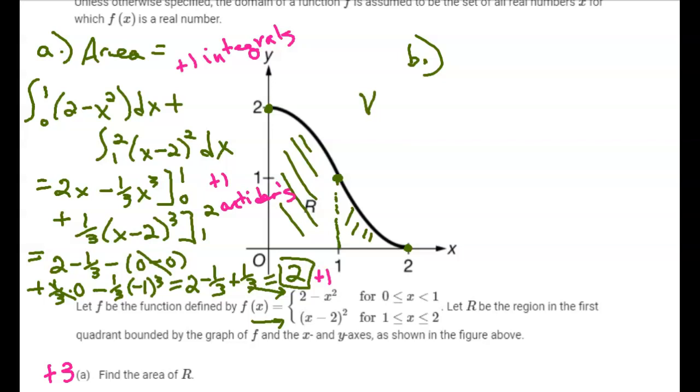The volume will be, again, I've got those two different functions, so I'm going to take the integral from 0 to 1. I want the areas of all these squares. Each one has an area of 2 minus x squared squared, base times height, since it's a square, dx, and I add that to the integral from 1 to 2 of x minus 2 squared squared dx. I can add up all of those infinitely narrow squares to get the volume.